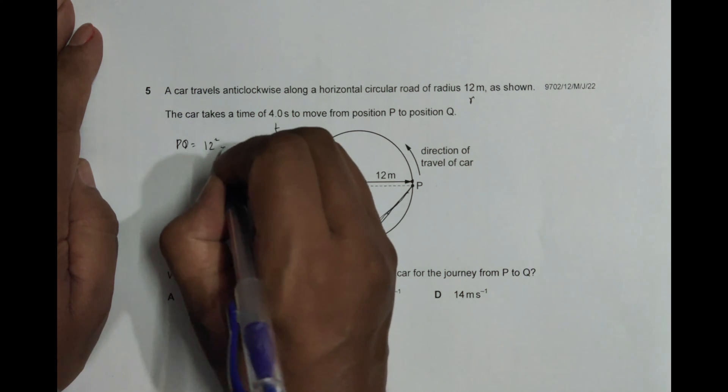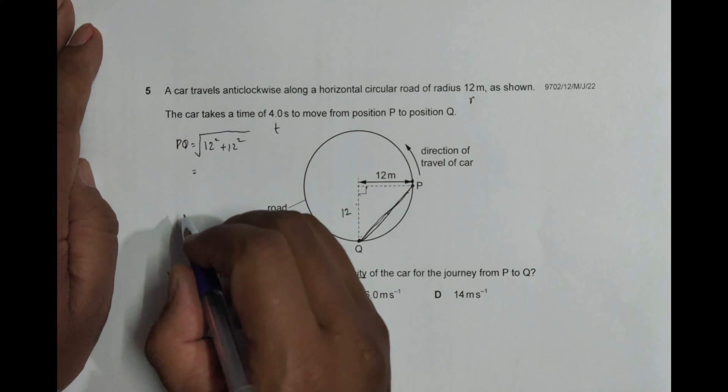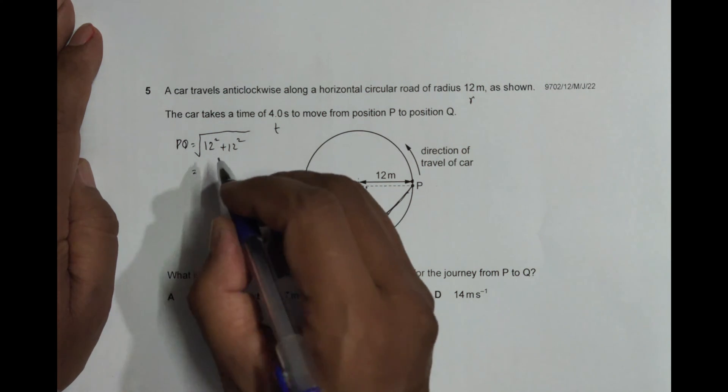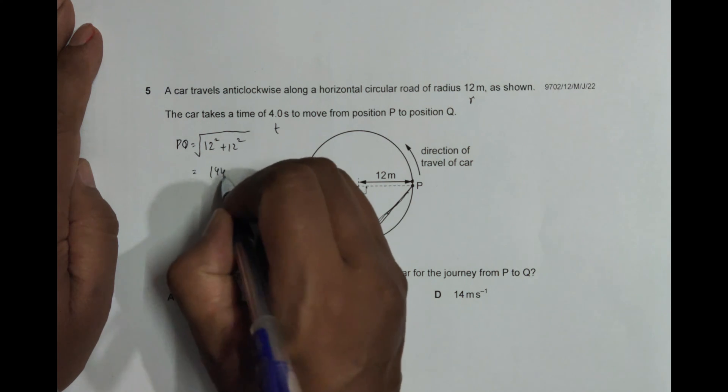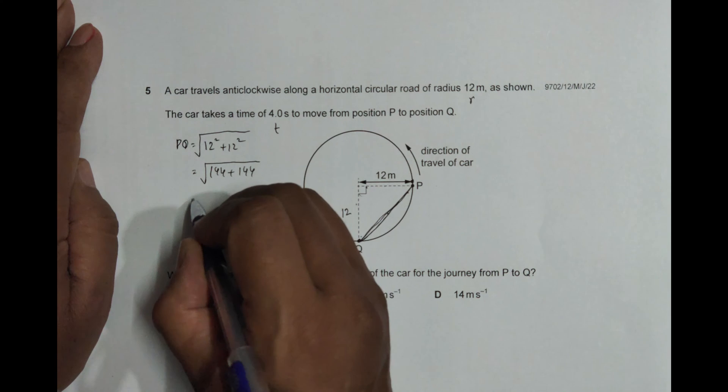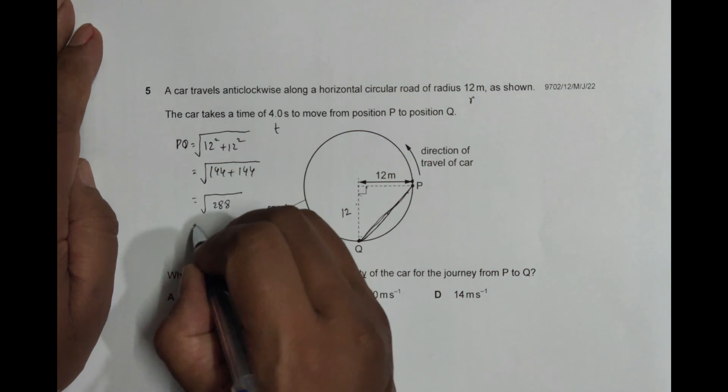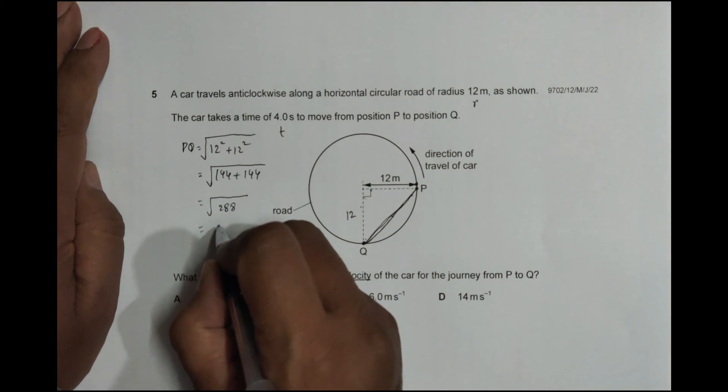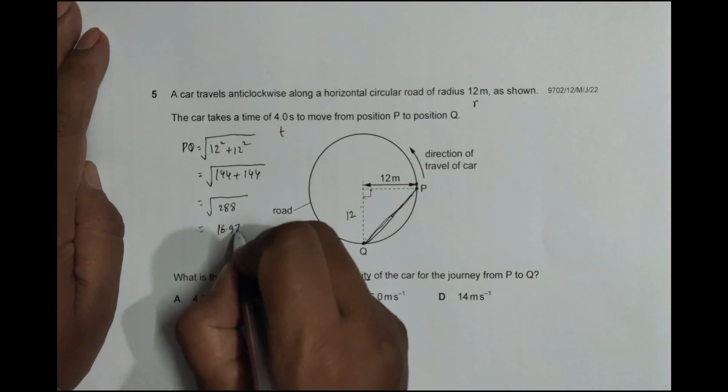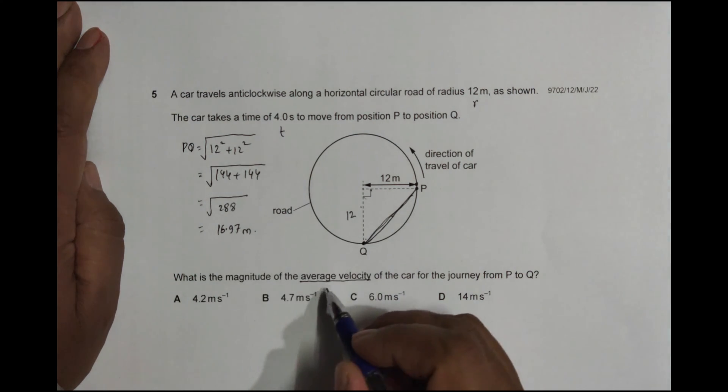So equal to, it will be 12 square is 144 plus 144 like this, so this will be 288. And the root of this thing will be 16.97 meters. Now the velocity will be equal to, so velocity average will be equal to displacement by time.